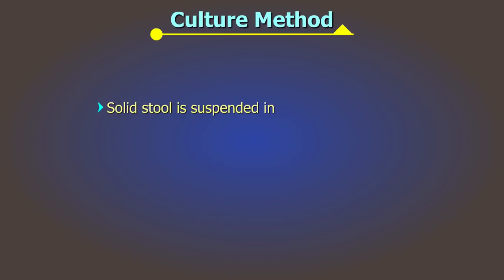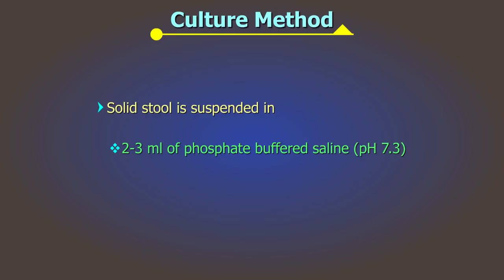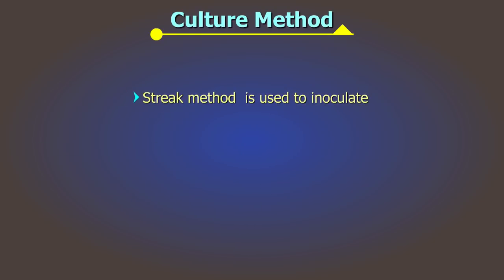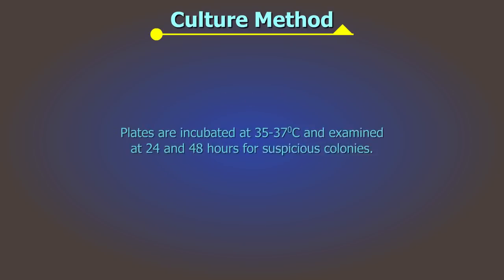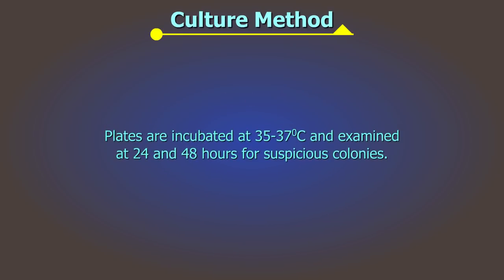Culture Method. Unless the sample is fluid, a portion of solid stool is suspended in 2 to 3 milliliters of phosphate-buffered saline or in 0.1% peptone water. Streak method of plating is used to inoculate blood agar, MacConkey agar, and one selective medium like XLD if required. All plates are incubated at 35 to 37 degrees centigrade and examined at 24 and 48 hours for suspicious colonies.